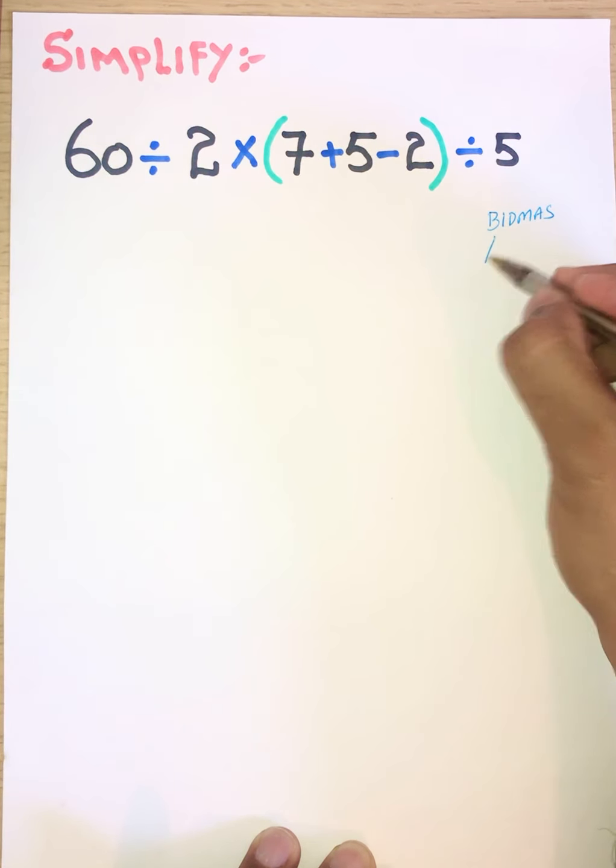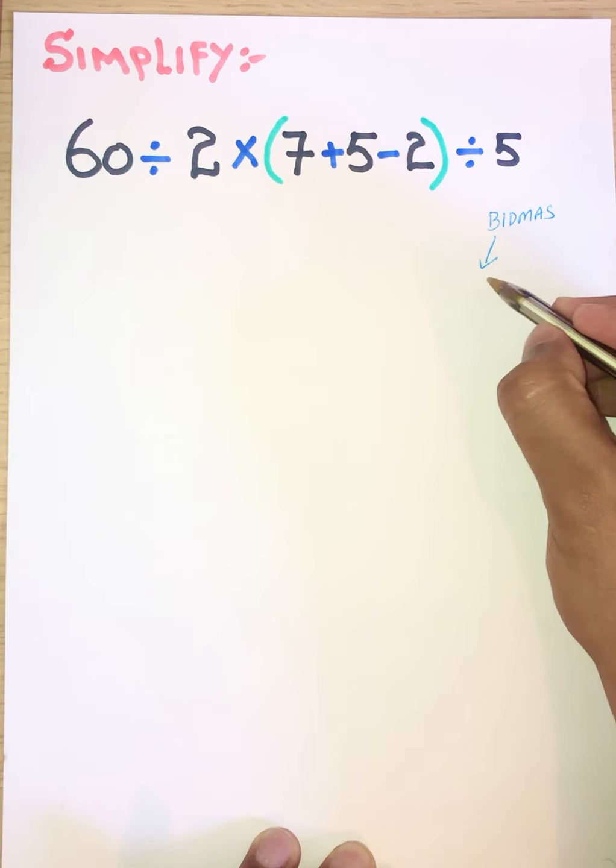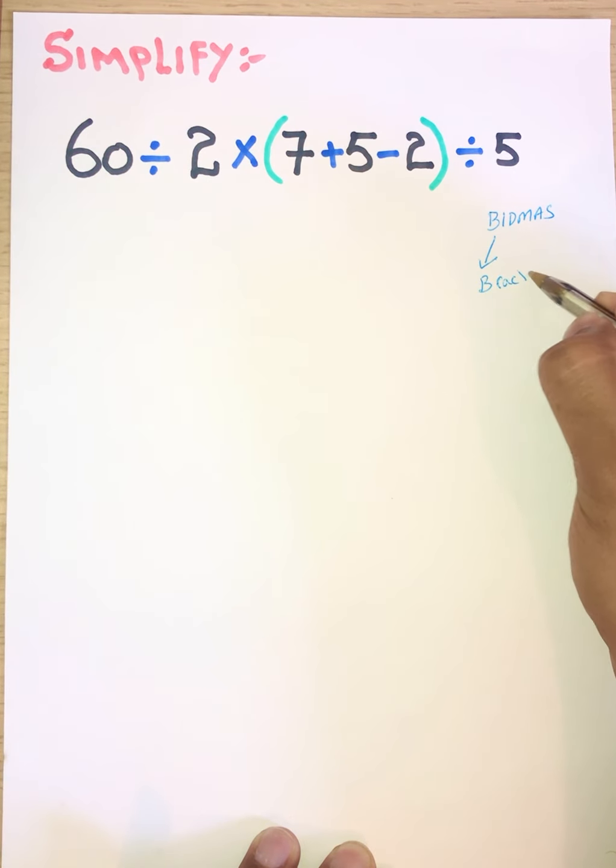BIDMAS - B is called bracket solving. We need to solve brackets. Whatever comes up we have to solve bracket first. Then after we can solve what operation belongs to.